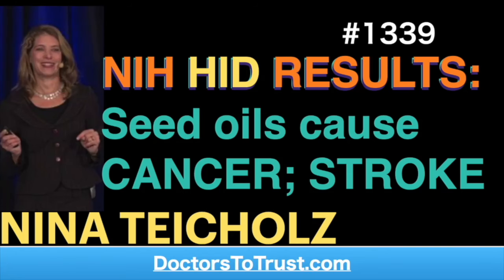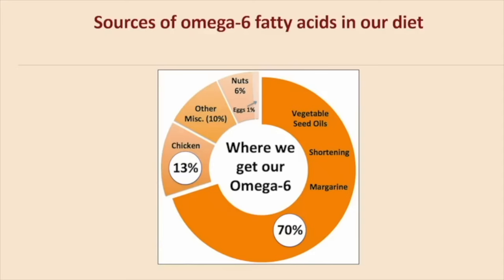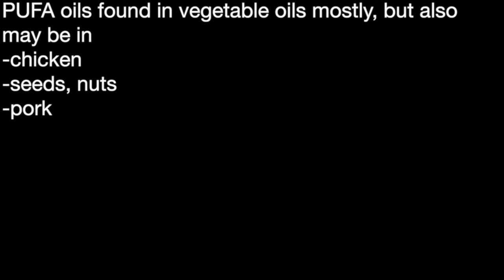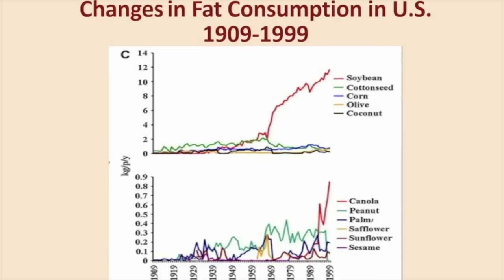What are the sources of these fatty acids in our diet today? Most of them come from vegetable oils. These polyunsaturated fats can also be found in nuts and seeds, and quite a bit in chicken and some pork products depending on how the pig is fed. But most of it comes from polyunsaturated vegetable oils. Looking at the top chart, the red line is soybean oil — most of the oil we consume in the U.S. is soybean oil.